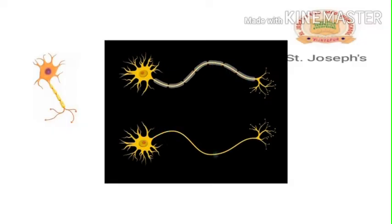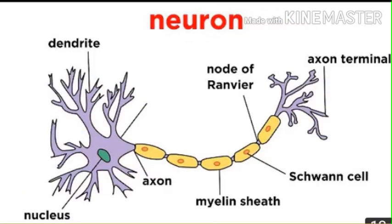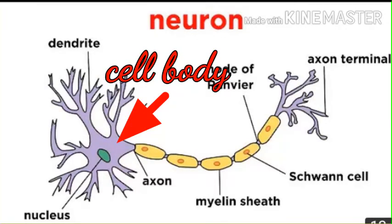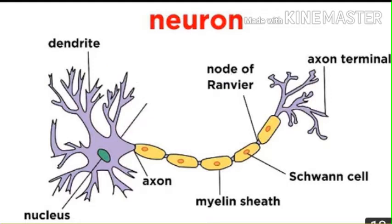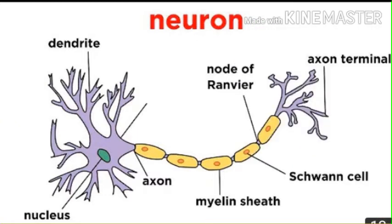Nerve tissues are made up of nerve cells called neurons. Their job is to transmit electrical signals throughout the body, helping the brain communicate with the body. The neuron has several parts: first, a cell body containing the nucleus and other organelles like mitochondria and ribosomes. They also have structures called dendrites, which can be compared to tree branches — these receive electrical signals from other neurons.